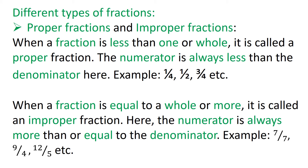Let us now see the different types of fractions — proper and improper fractions. What is a proper fraction? When a fraction is less than one or whole, it is called a proper fraction. The numerator is always less than the denominator. Examples: one-fourth, half, three-fourth, etc. When a fraction is equal to a whole or more, it is called an improper fraction. Here the numerator is always more than or equal to the denominator. Examples: 7 upon 7, 9 upon 4, 12 upon 5, etc.